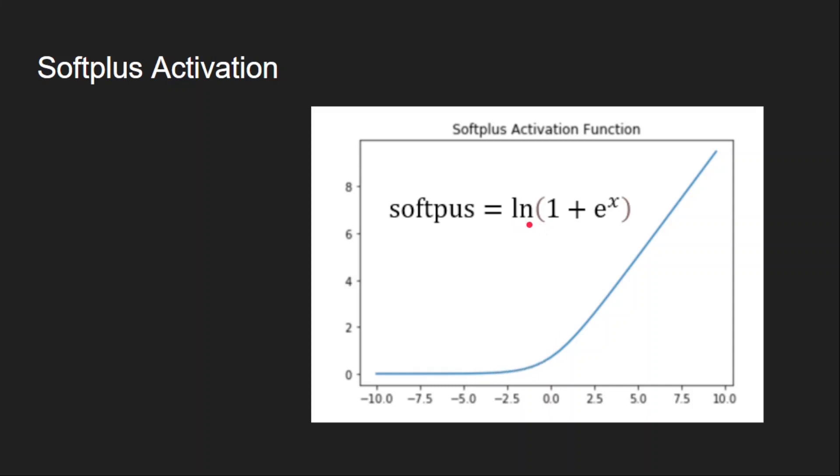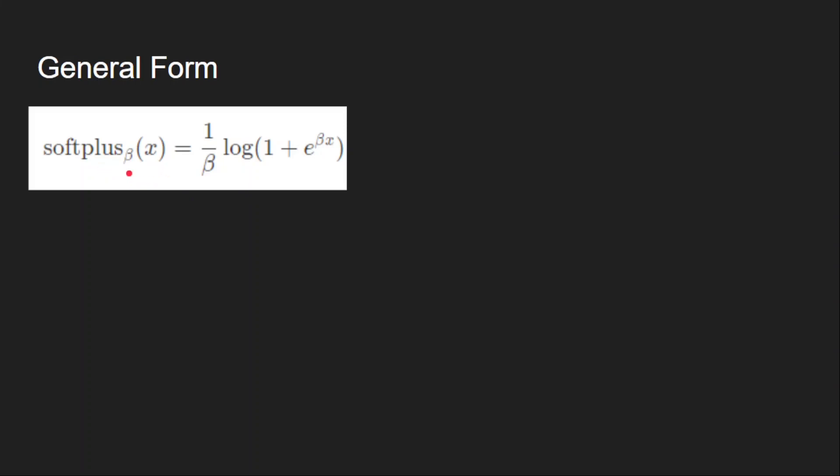The equation is quite simple: it's ln of 1 plus e^x. By adding a parameter here you can control the transition. This is the general form of softplus activation.